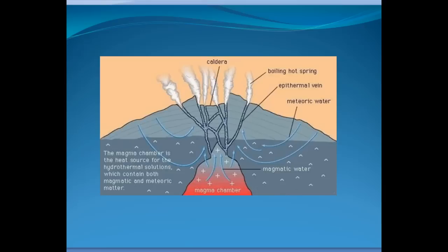Epithermal veins don't form in every place there's a caldera — sometimes the chemistry isn't right, there's not enough water, or there's not a good source of gold and silver. But the Yellowstone hot spot has been producing, and the hot spot underneath there has been migrating — actually, the hot spot is stationary but the North American plate is moving over the top of it. In northern Nevada, where erosion has brought deeper epithermal veins up to the surface, you have really rich deposits of gold and silver.